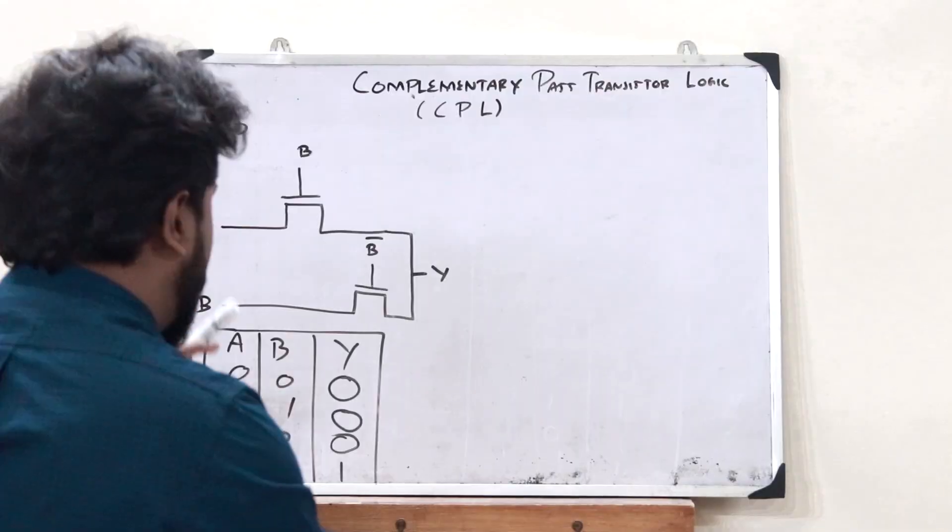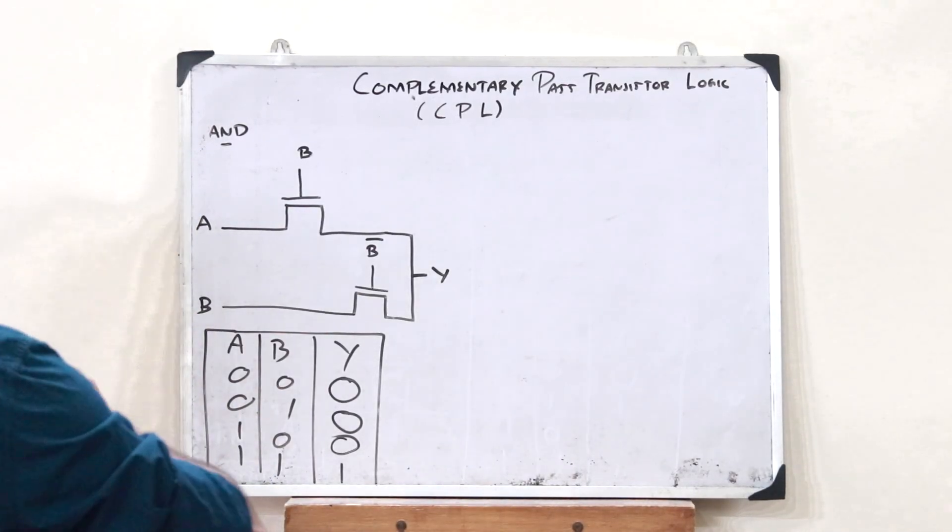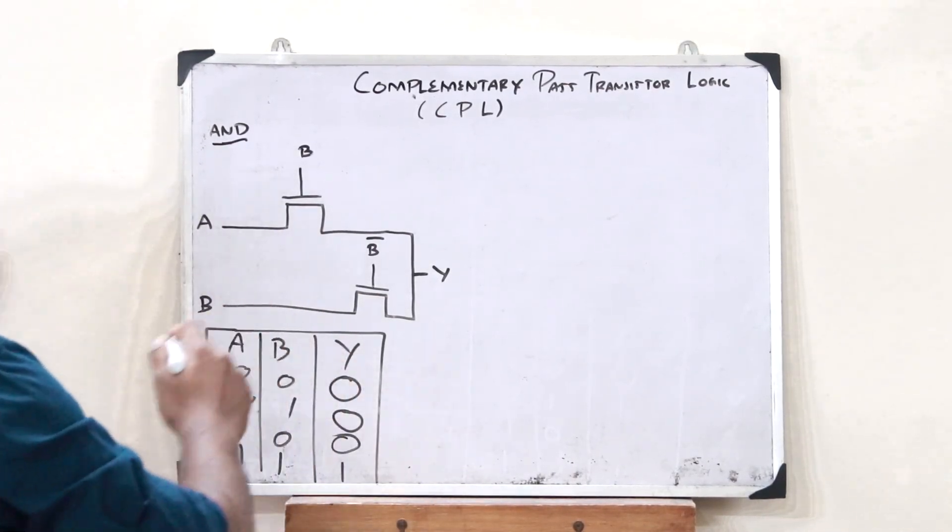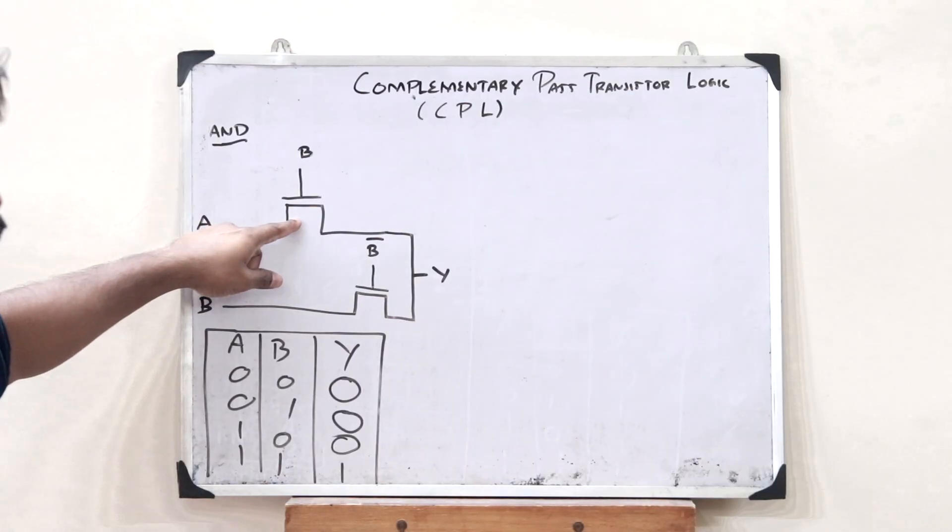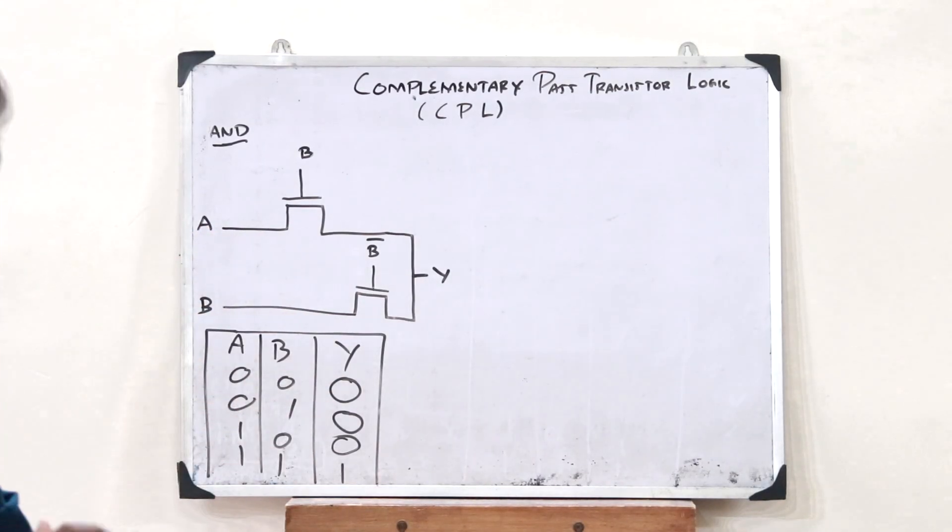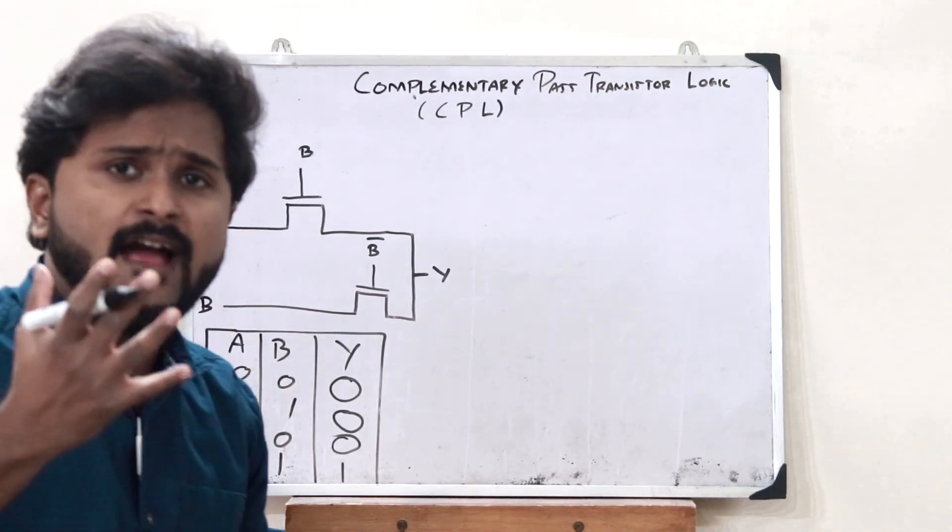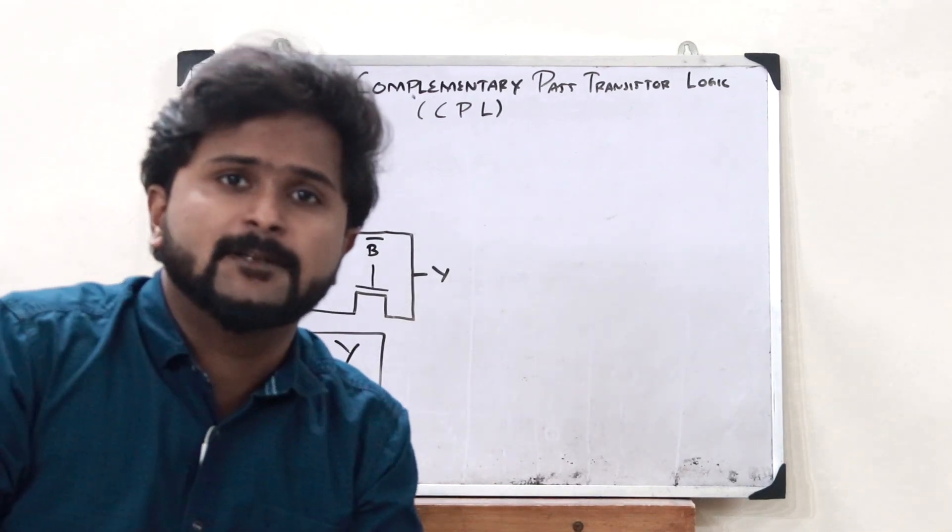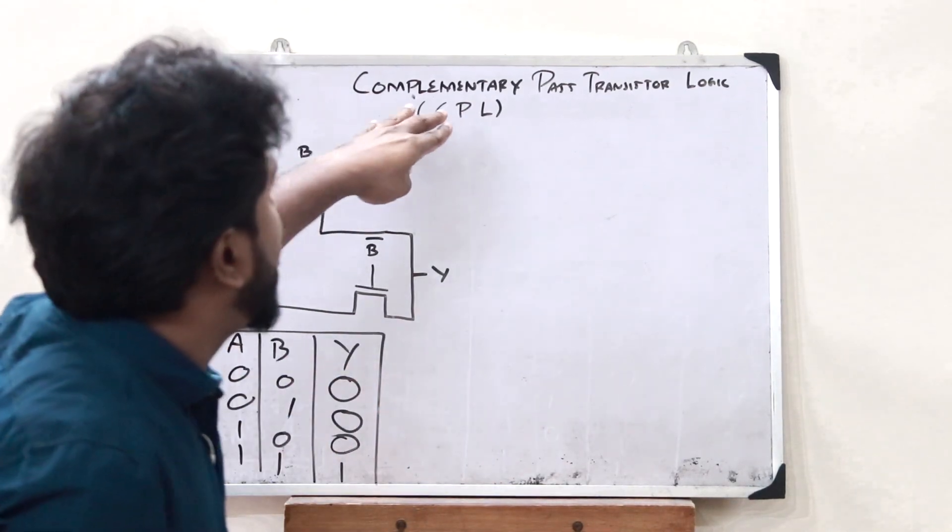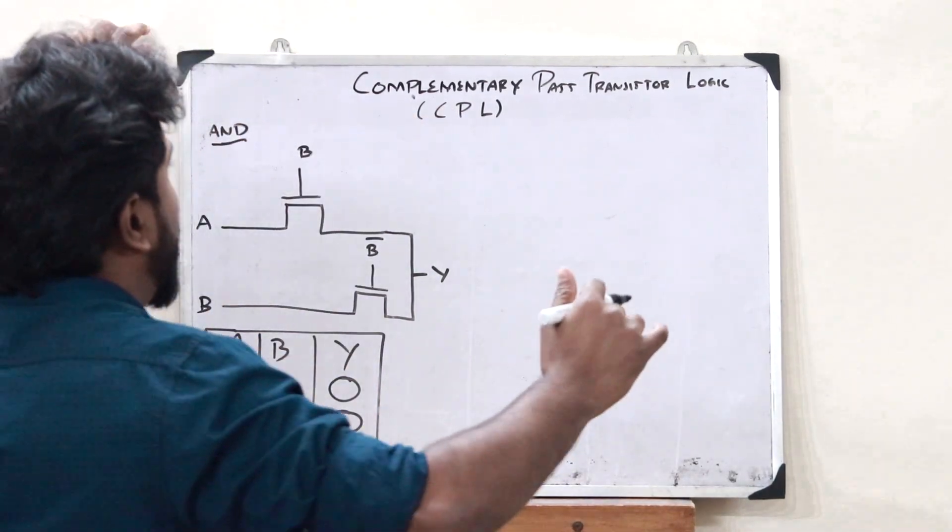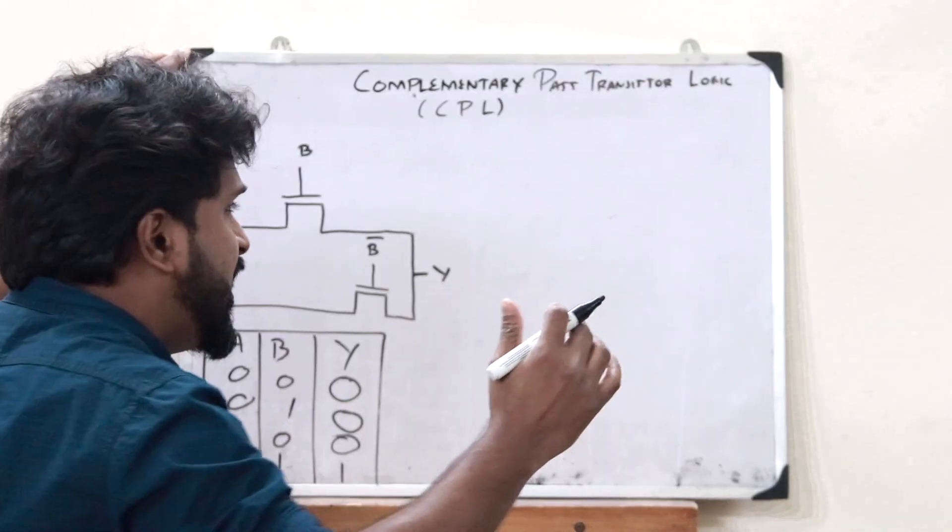With the help of a pass transistor logic, we were able to construct an AND logical operation like this with the help of two NMOS transistors. But now, what do we do if we have to get a NAND operation? That is, when we use a complementary pass transistor logic. So, this is very simple.